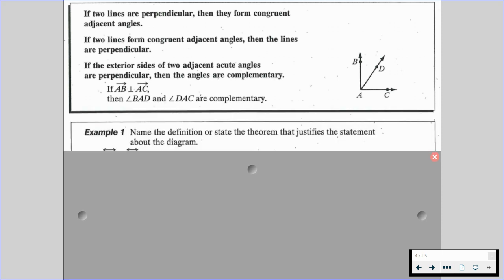In this example, we're asked to name the definition or state the theorem that justifies a statement about the diagram. Statement A: if line WY is perpendicular to line ZX, then angle 1, angle 2, angle 3, and angle 4 are right angles.